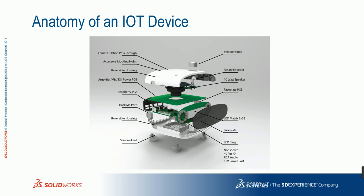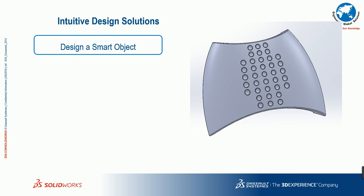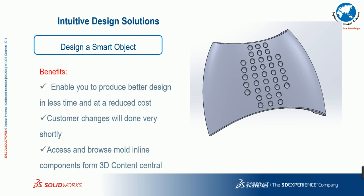On screen you can see the anatomy of an IoT device containing a lot of plastic components that need to be manufactured with very precise tolerances. To do this, we go for smart object creation inside SOLIDWORKS. You can use surface modeling tools to achieve the accurate aesthetic look of your plastic components, enabling you to produce better designs in less time. Any design changes can be made instantly, and you can also create pattern components for plastic parts using the standard 3D Content Central library.